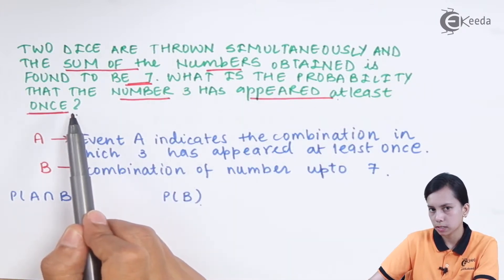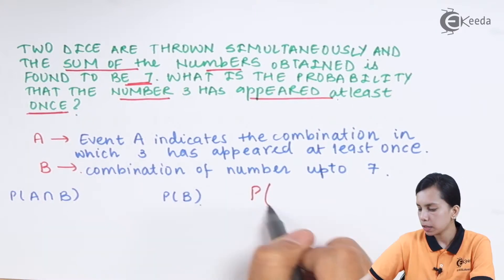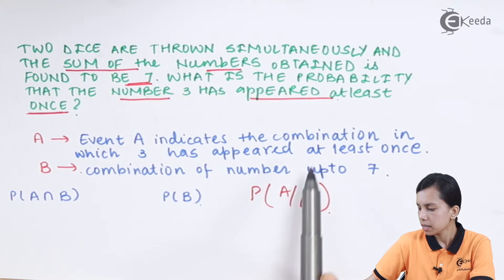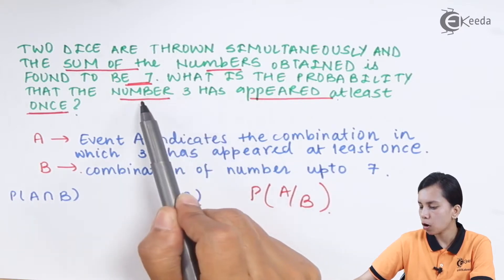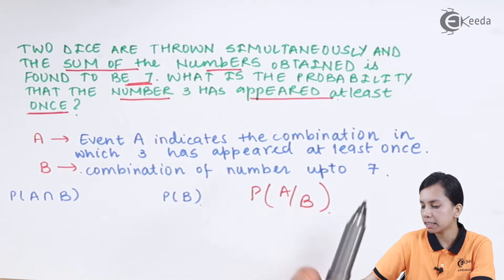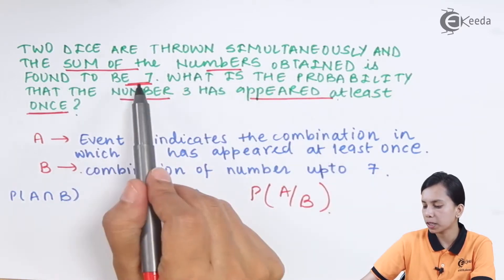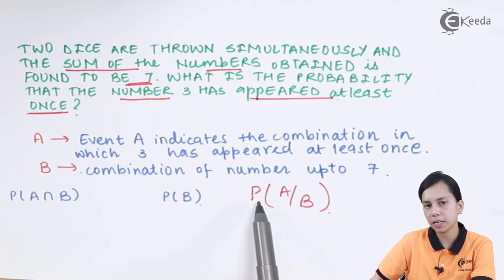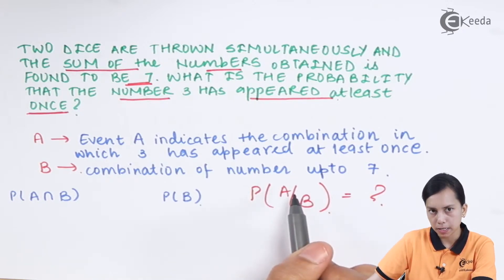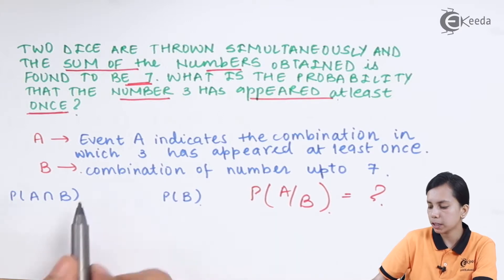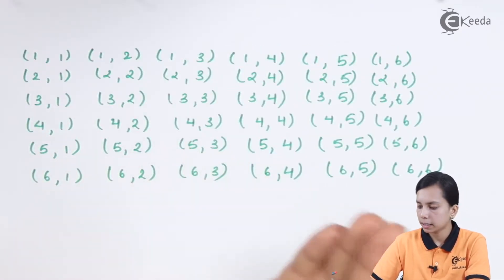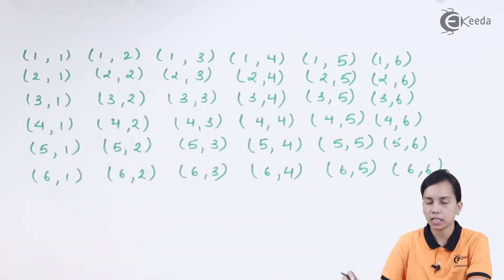Our purpose is to find the probability that the number three has appeared at least once, that is P(A|B), because event A indicates the probability of getting number three at least once, and B is already given that the sum of the numbers obtained is seven. So our conditional probability will be P(A|B). To find P(A|B) according to the conditional probability formula, we need to find P(A∩B) and P(B). There are a total of 36 sample spaces when two dice are thrown.